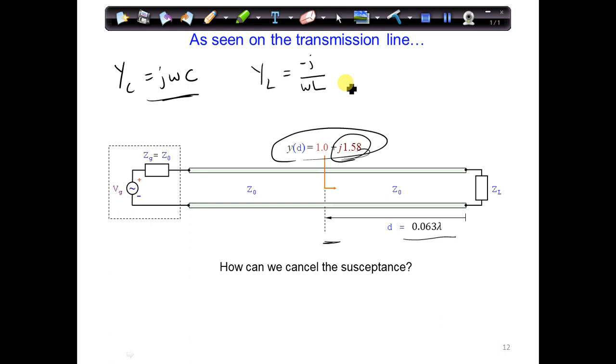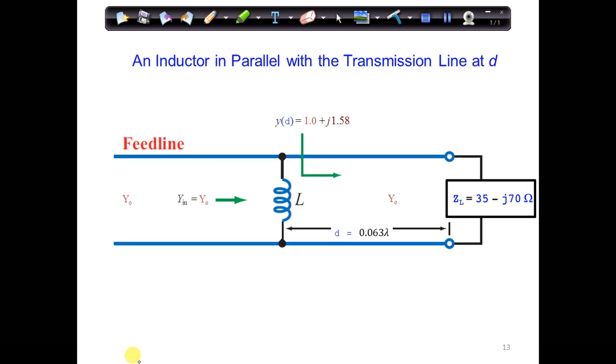As a result, we should choose an inductor for our case that will allow us to cancel this j1.58. So we need to find an inductance value, L, that we can use to cancel that positive 1.58.